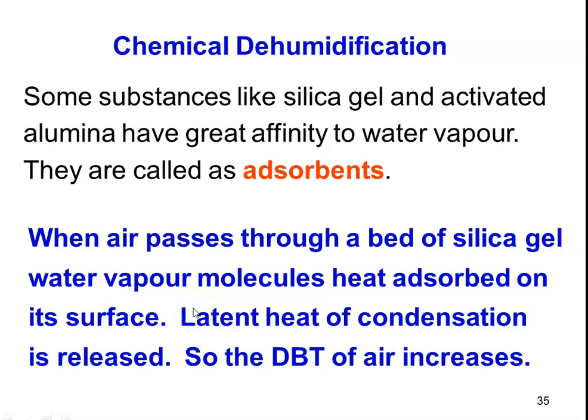Chemical dehumidification avoids the need for a refrigeration cycle. Instead of a vapor compression refrigeration cycle, we use chemicals like silica gel or activated alumina, which have a great affinity for water vapor. These are called adsorbents. Using adsorbents to remove water vapor from air is what is called chemical dehumidification.